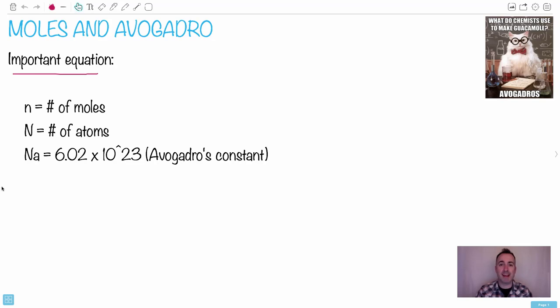Okay, I'm going to talk to you about moles and Avogadro. First of all, I love this joke: what do chemists use to make guacamole? Avocados, because of course you need avocados. Okay, so let's talk about moles and Avogadro.